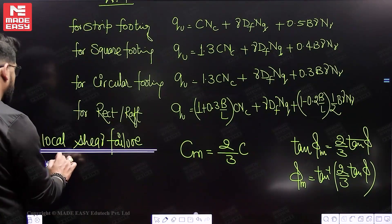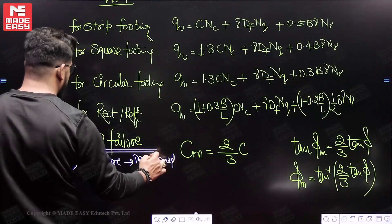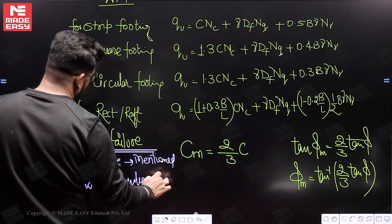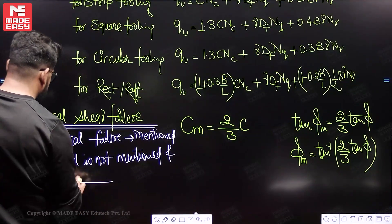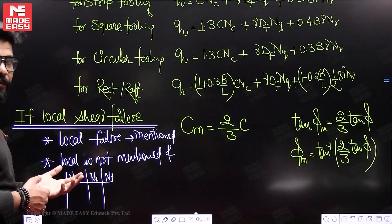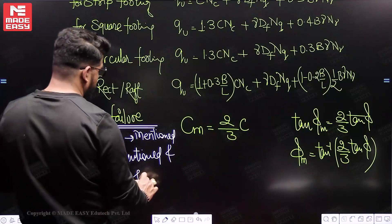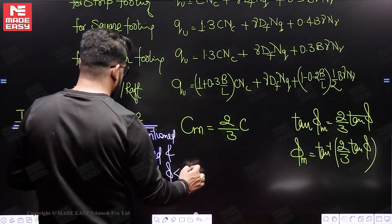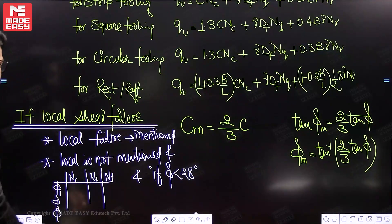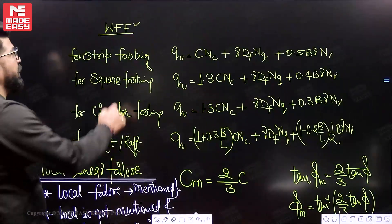In the question, we generally assume local shear failure only when it is explicitly mentioned. If local shear failure is not mentioned but a table is given for NC, NQ, Nγ and φ is less than 28°, then we take local shear failure. So remember: if local failure is mentioned, take local shear failure; if not mentioned but table is given and φ < 28°, assume local shear failure. This is the second modification — for failure.